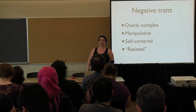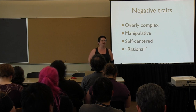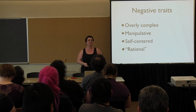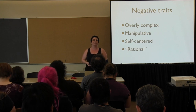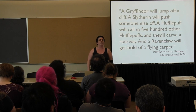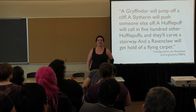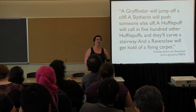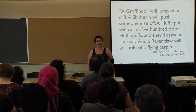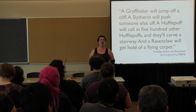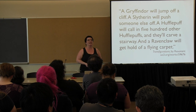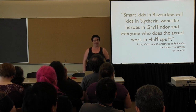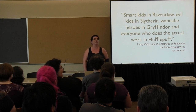For those less familiar with the Harry Potter house system, here are two quotes. From Transfigurations by Resonant: 'A Gryffindor will jump off a cliff. A Slytherin will push someone else off. A Hufflepuff will call in 500 other Hufflepuffs and they'll carve a stairway. And a Ravenclaw will get hold of a flying carpet.' From Harry Potter and the Methods of Rationality: 'Smart kids in Ravenclaw, evil kids in Slytherin, wannabe heroes in Gryffindor, and everyone who does the actual work in Hufflepuff.'